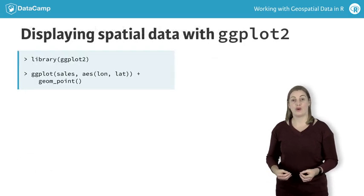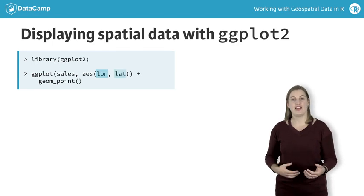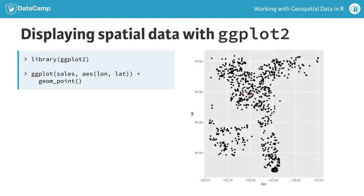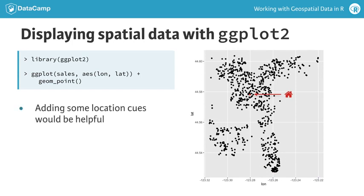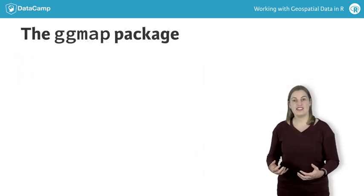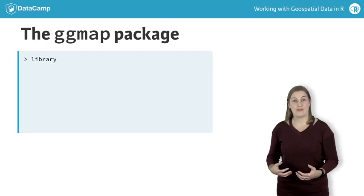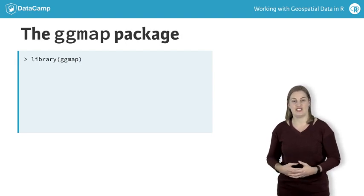When spatial data is stored in a data frame, you already have tools to display it. For example, using ggplot2, we can plot all the house sale locations by mapping the x-position to longitude and the y-position to latitude. This doesn't look like much of a map, because it's missing spatial cues, like terrain and roads, that help orient us when we're looking at spatial data. In this chapter, we'll use the ggmap package to add these spatial cues to our plots. The ggmap package downloads maps from web services and adds them as a layer in ggplot2 plots.